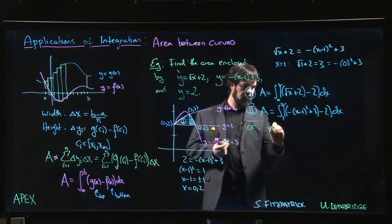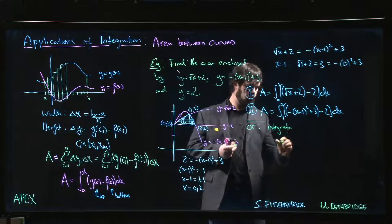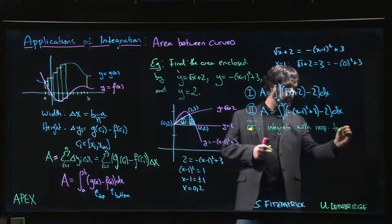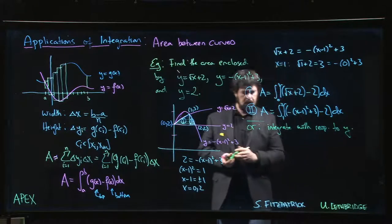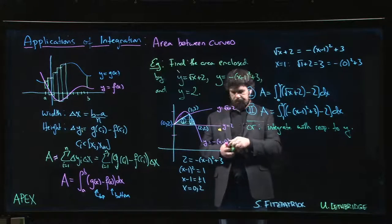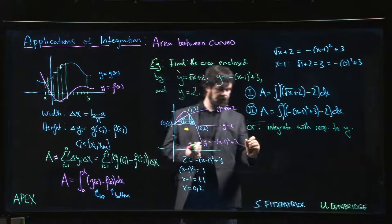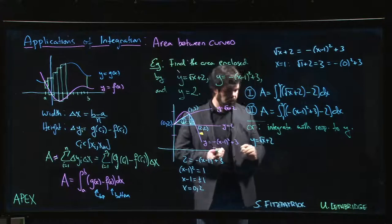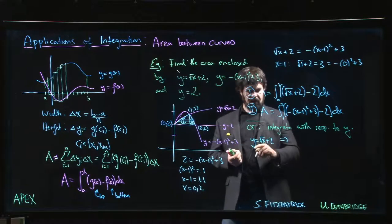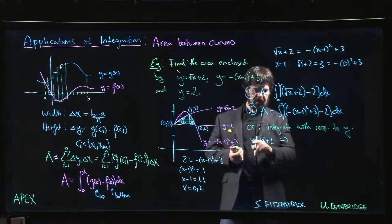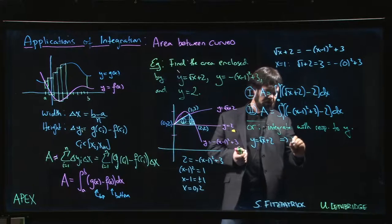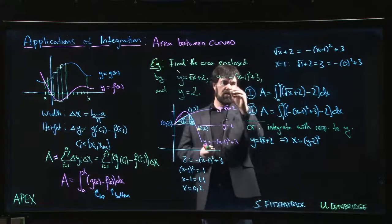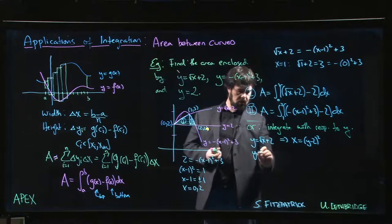So the other way you can do this is you integrate with respect to y. Okay, so how does that look? Well first of all we say that if y = √(x+2), that implies that we subtract 2, we'll have √x = y - 2. We square both sides, x is going to be (y-2)².